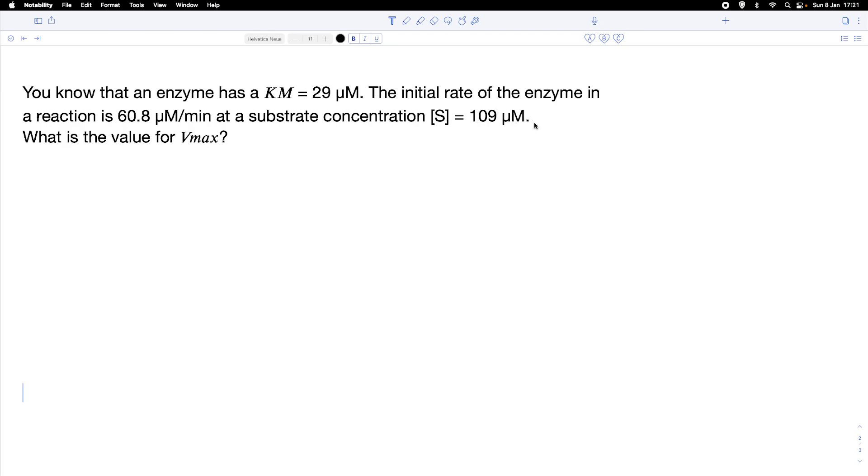We are already way above the Km for our substrate concentration, so we can expect Vmax to be in the range of the initial rate, but probably a little bit higher. So how can we calculate this?